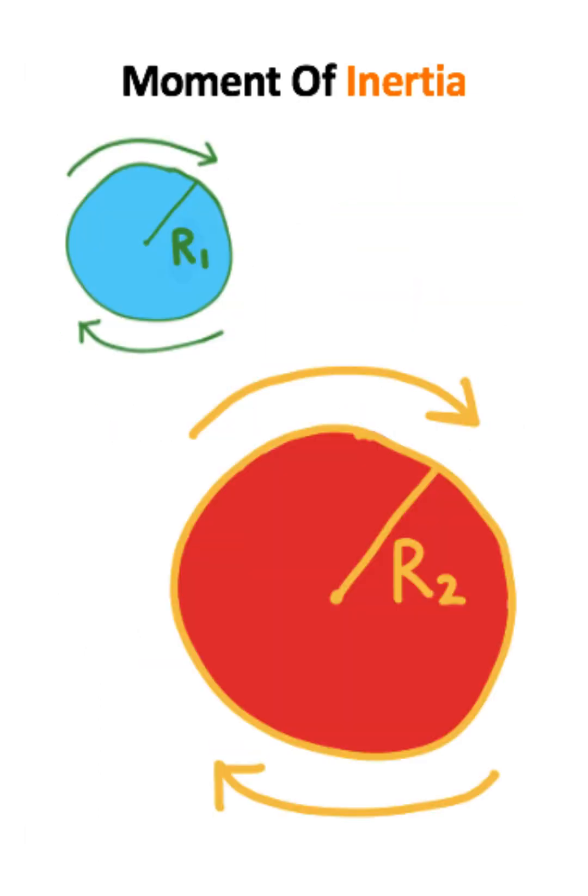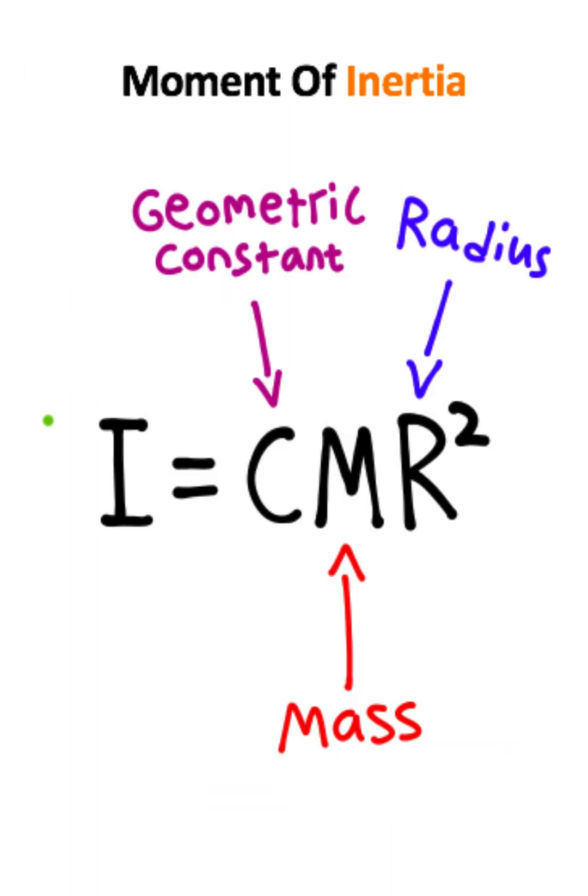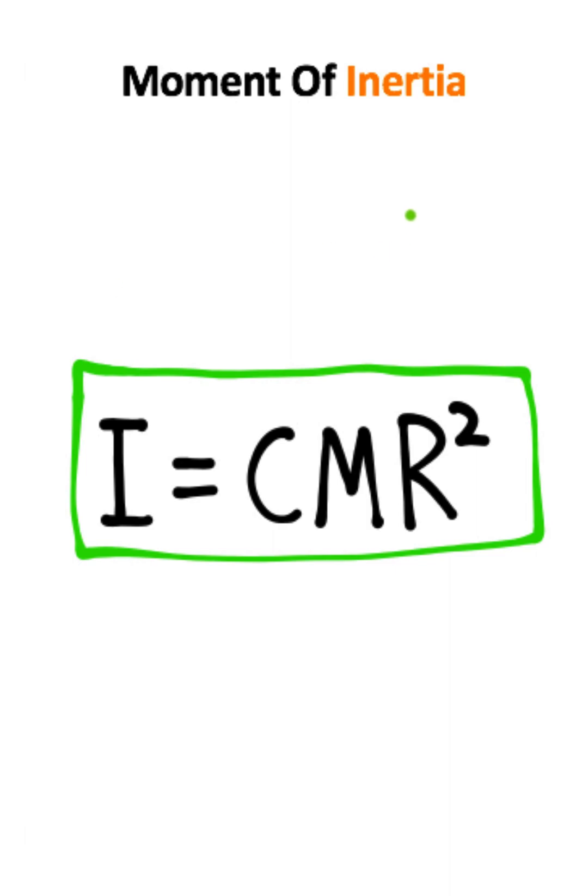So for common geometries like thin hoops, disks, and spheres, the moment of inertia is equal to the geometric constant times mass times the radius of the object squared.